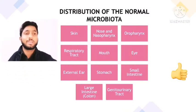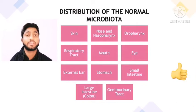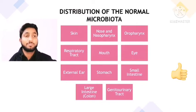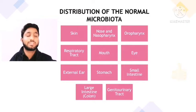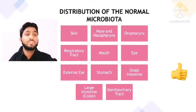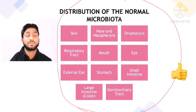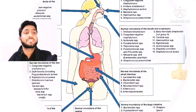Regarding distribution of normal microbiota, the sites where normal microbiota are distributed include: skin, nose and nasopharynx, oropharynx, respiratory tract, mouth, eye and external ears, stomach, small intestine, large intestine, and the genitourinary tract. Microorganisms are normally present at all these sites. Some play beneficial roles and some can cause diseases, which we will discuss one by one.